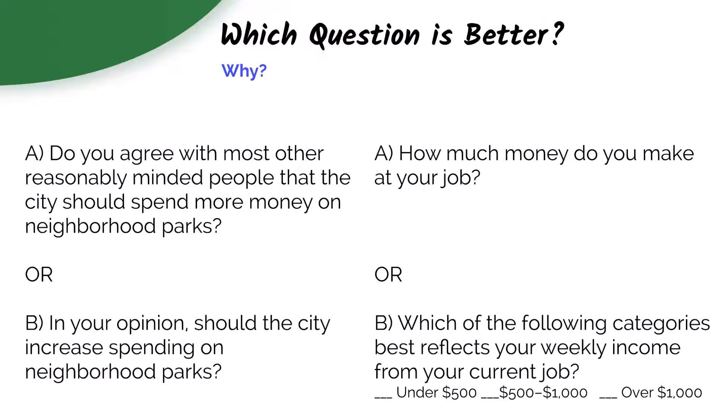B is better, again, because A is too vague. It doesn't specify if it's annual, hourly, monthly, or weekly income, whereas B specifies a timeframe, and it's closed-ended in that it gives you options to choose from. With income questions, respondents may be sensitive to providing detailed information.